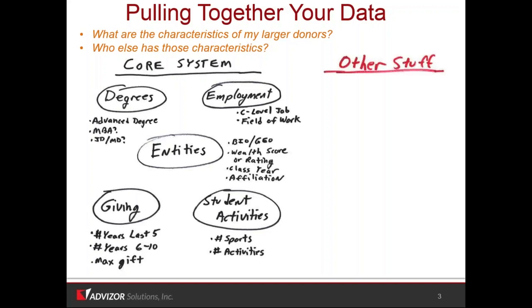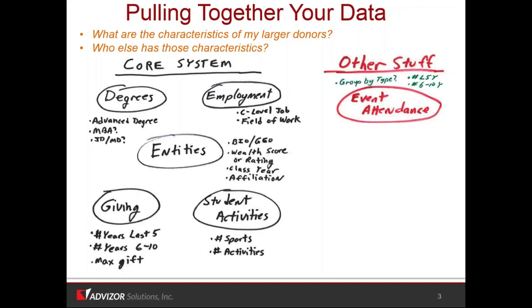There's other data — some consultants call it dark data, I call it other stuff. For example, event attendance. Sometimes it's in the core system, sometimes it's not. But it has information on how many events they've come to in the last five years, the last six to ten years, what types of events. Some events create more engagement and attachment than others, and you can figure that out and put weights on it, group by type. Volunteer committees might be another type — sometimes it's in an event table, sometimes a committees table. That's also helpful because now they're more engaged on a regular basis.